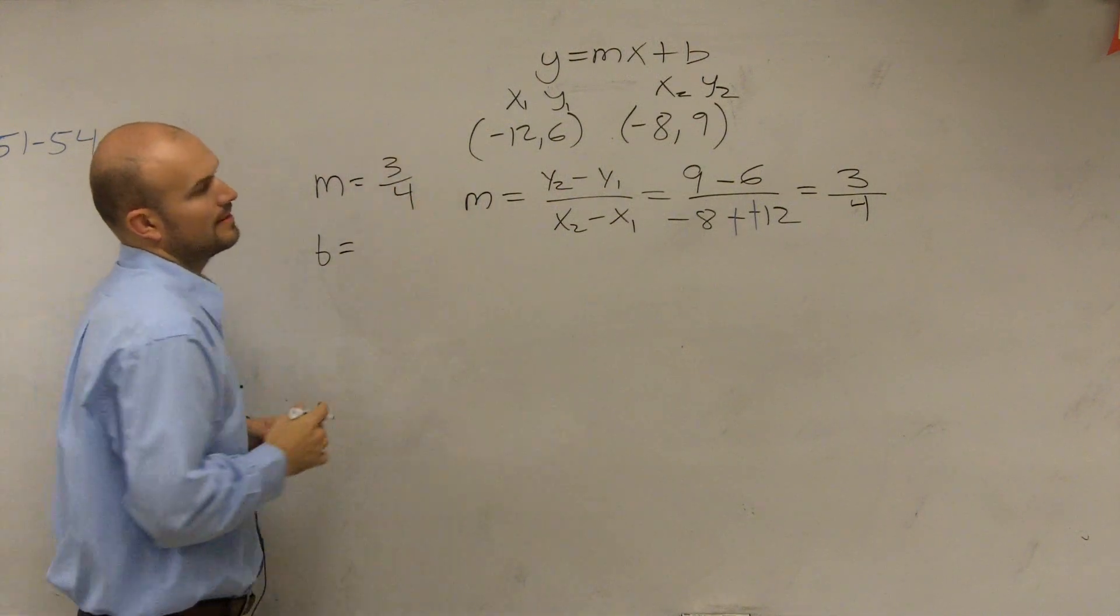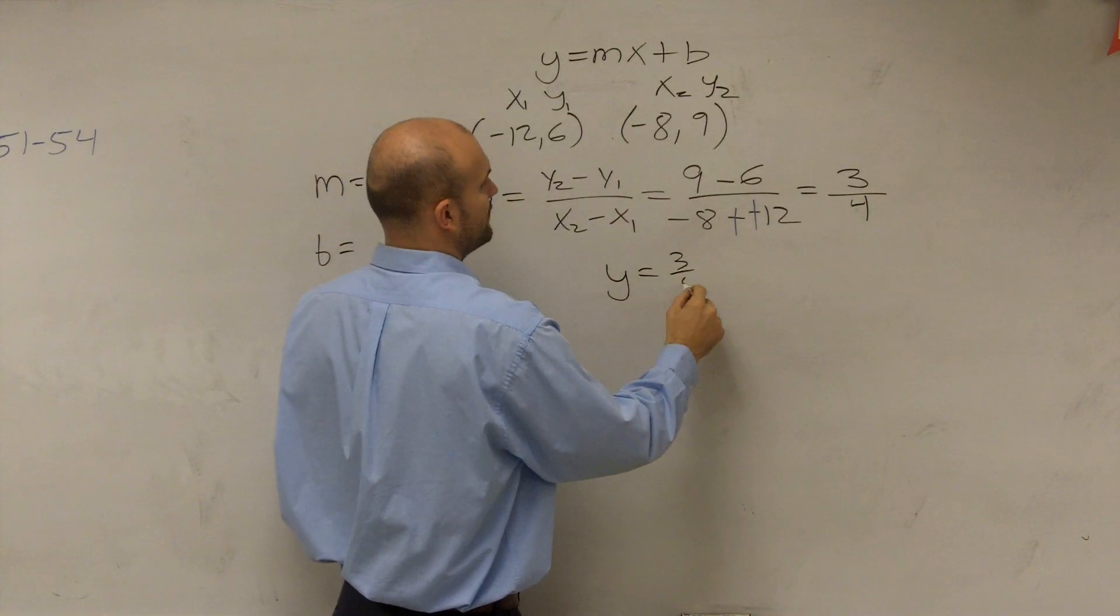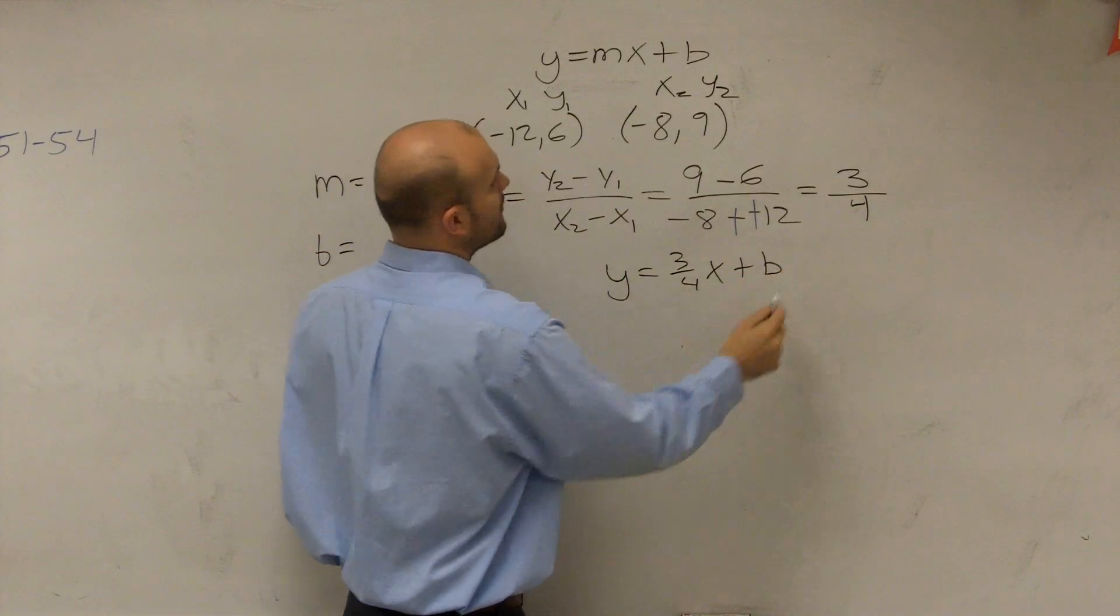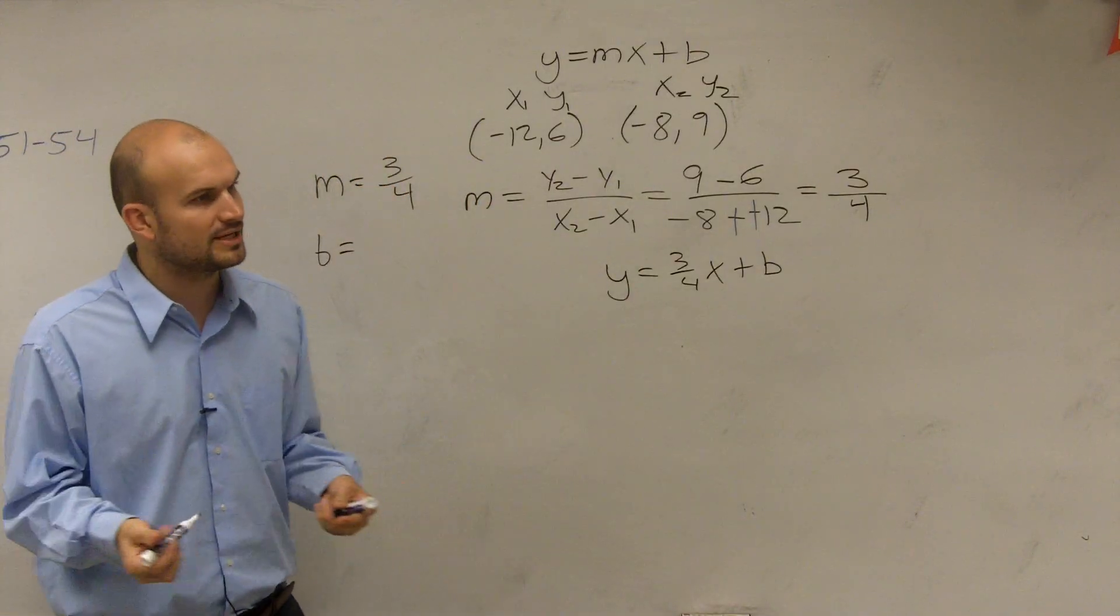So we're halfway there. Now we write our equation y equals 3 fourths x plus b. But we still don't know what the y-intercept is. So what's the only piece of information that we're given?